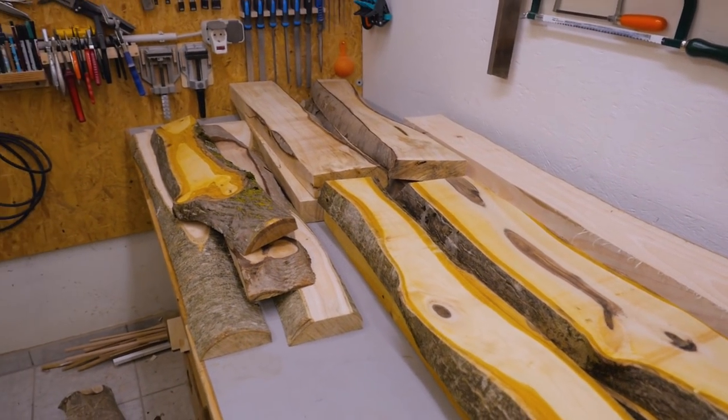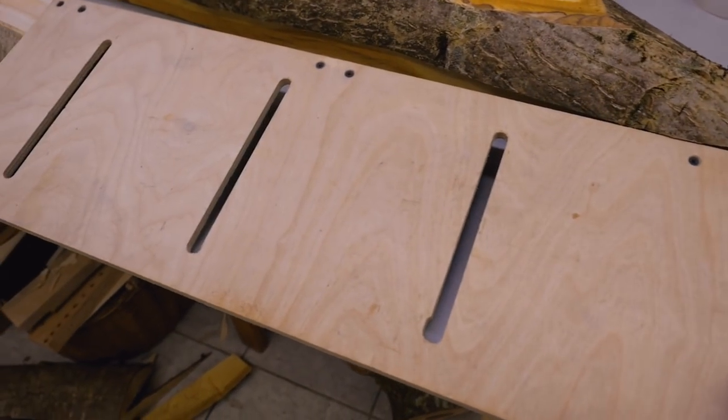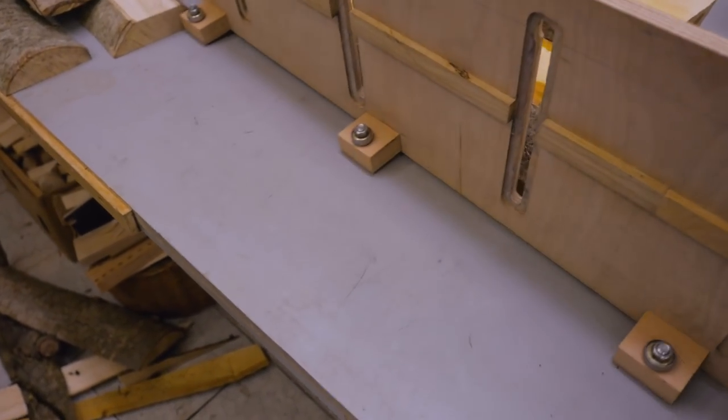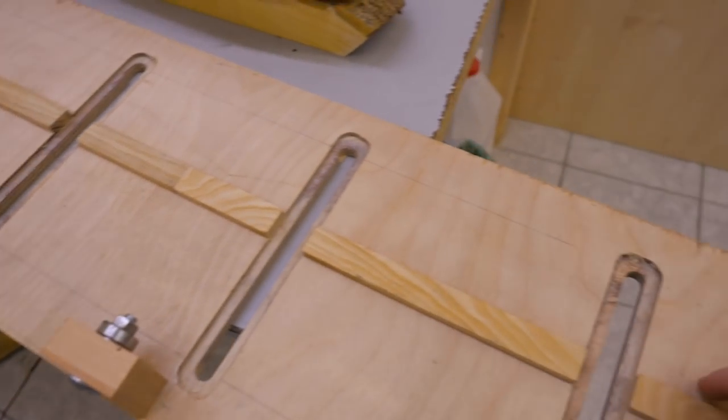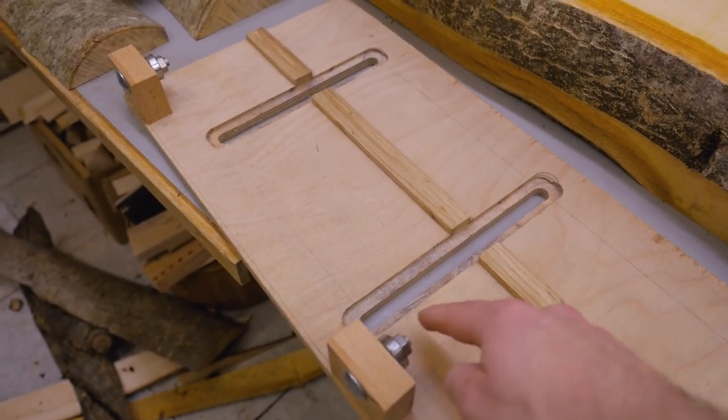Some of you may be also interested in the little sled for the bandsaw. It's basically just a piece of plywood with a long wooden runner. I also have some slots for clamps and these bearing guides at the side.